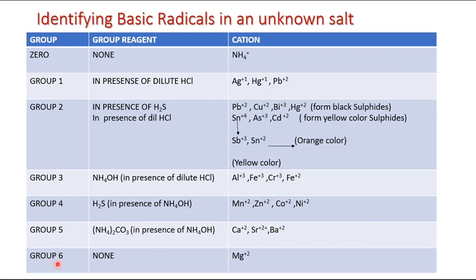In Group 6, we have no group reagent. By this time we should be able to answer why there is no group reagent — because there is not a group of ions. We have only one ion in this group.